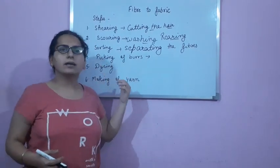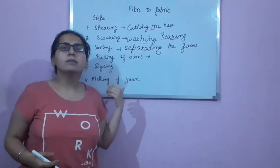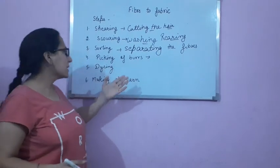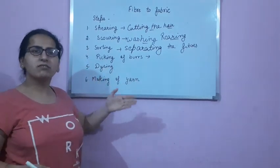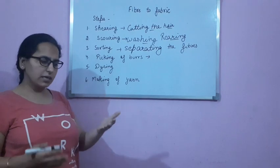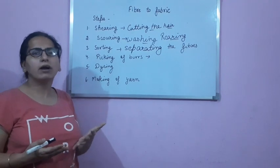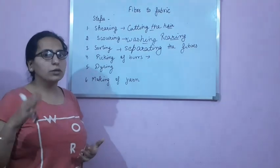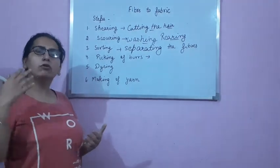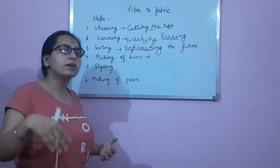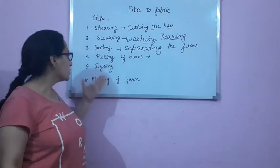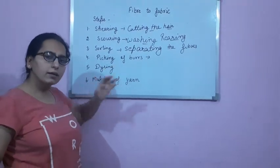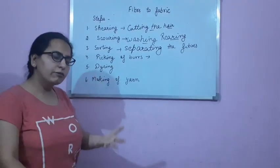Next is dyeing. Dyeing means to color. The natural color of sheep's fleece is either black, white, or brown. But the wool available in the market is of different colors. So in this step, we dye the fleece.